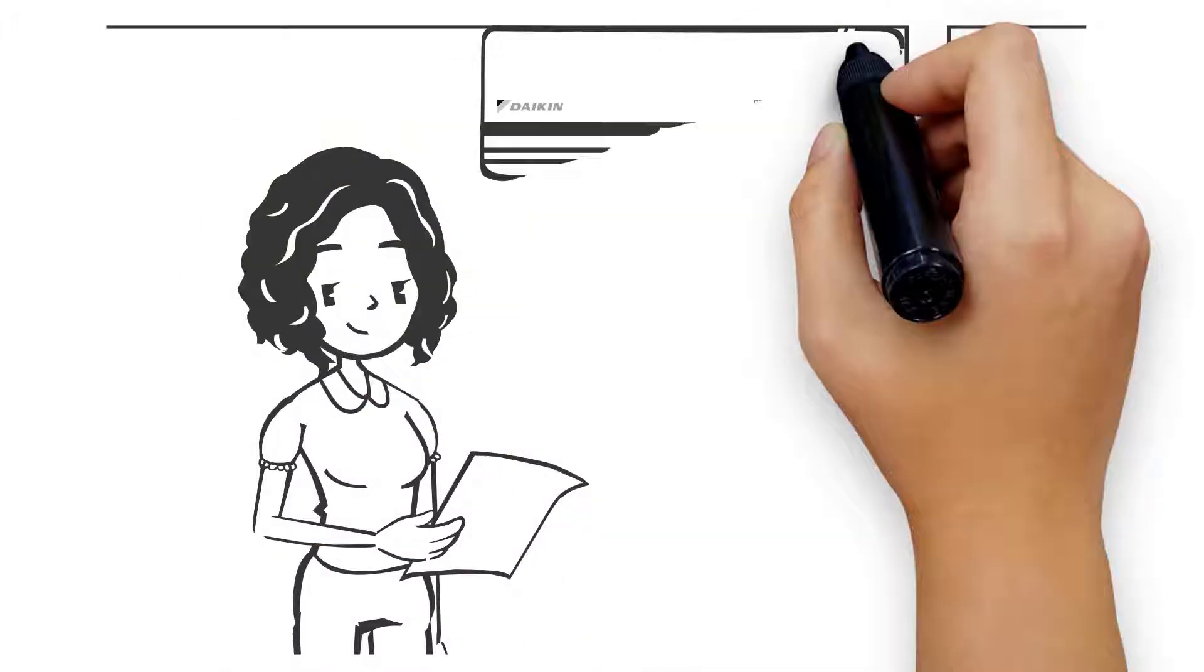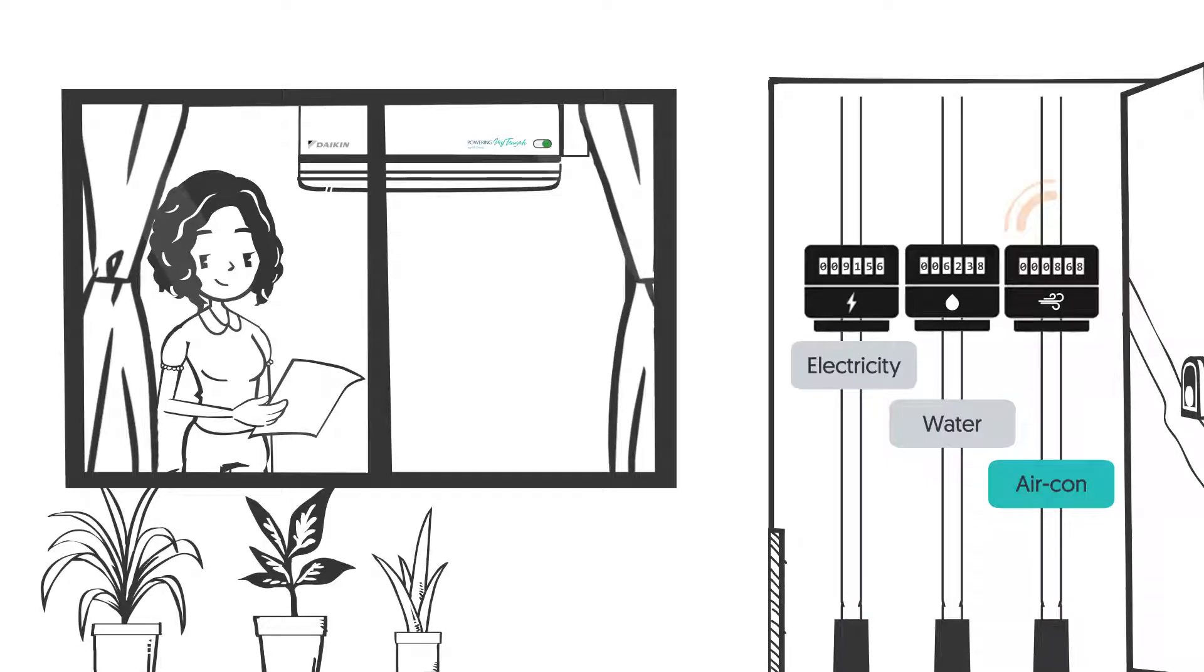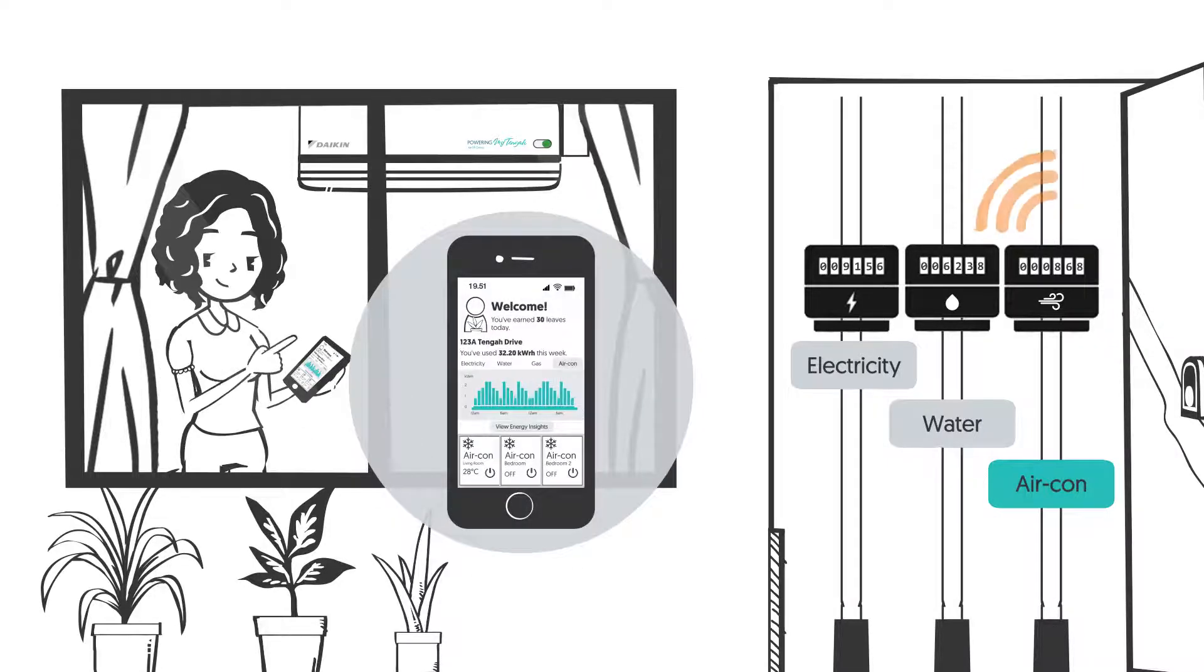Every month you will receive a bill just like one for electricity and water. Meter reading is automatic, so you can monitor exactly how much cooling you've used and when.